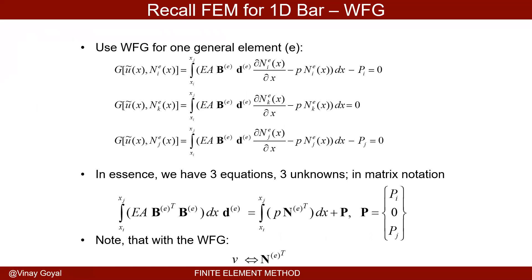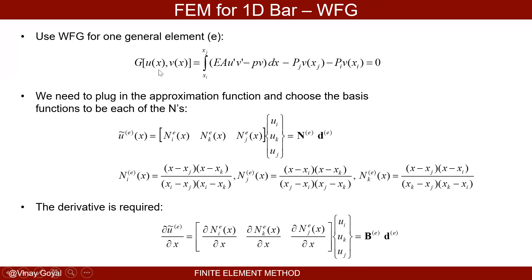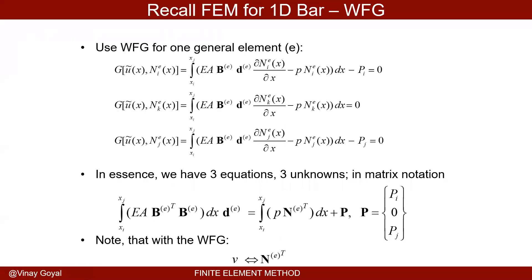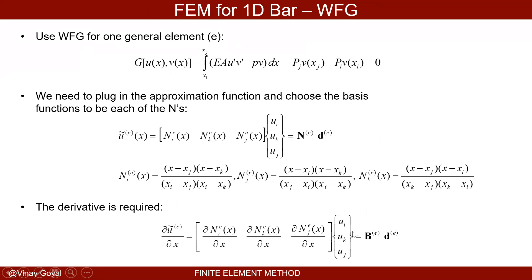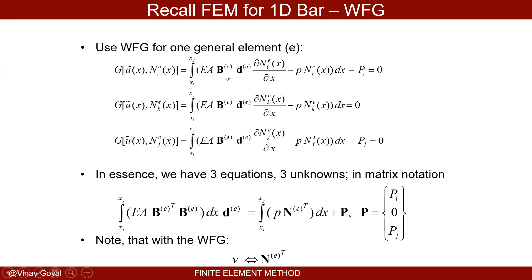For the weak form Galerkin approach, we substitute U̅ (the approximation function) for U and N bold transpose for V. Plugging N_I for V gives equation one, N_K for V gives equation two, and N_J for V gives equation three. We have three equations for three unknowns: U_I, U_J, U_K. For U′, I substitute B bold · D bold.